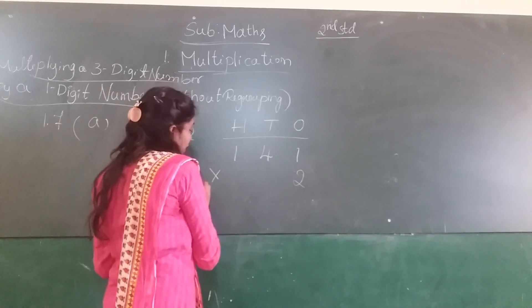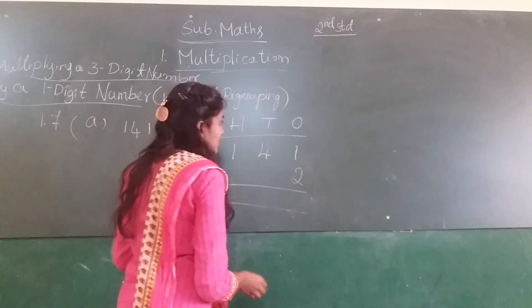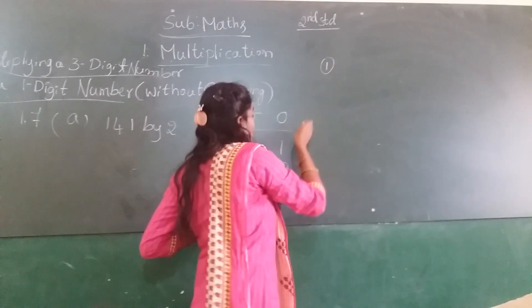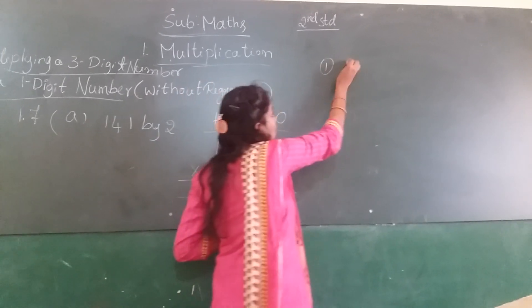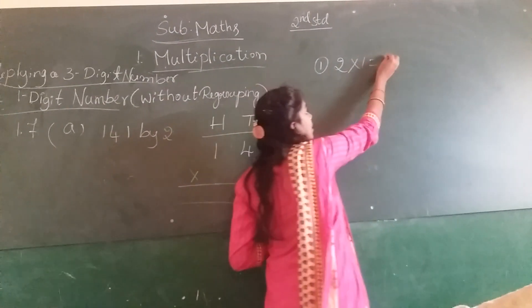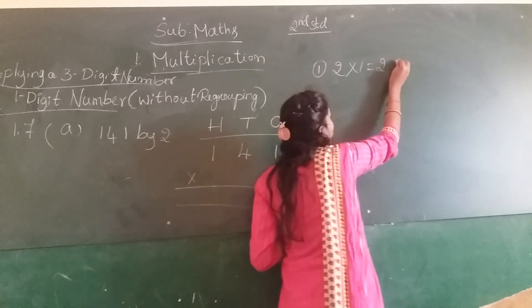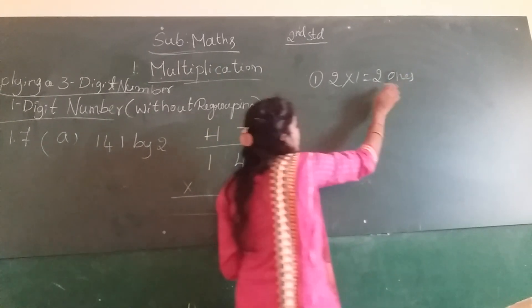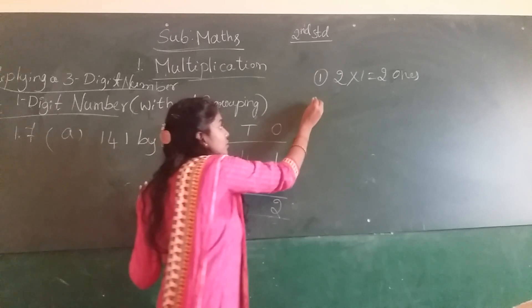How do we multiply? Multiply the ones. So first step is the ones column. 2 into 1, 2 times 1 equals 2. So 2 ones right here in the ones column.